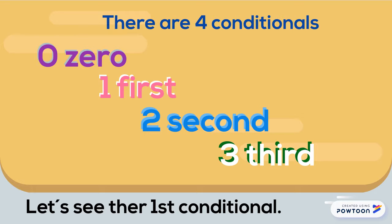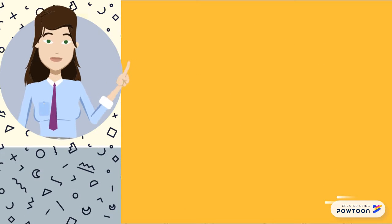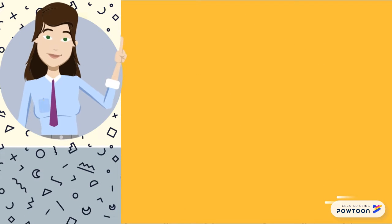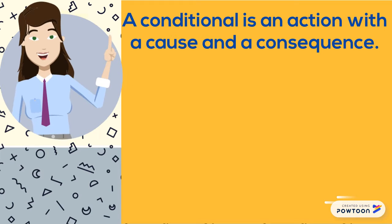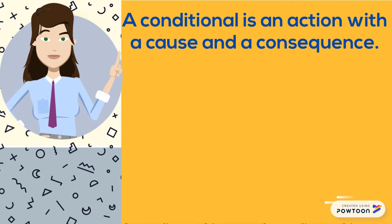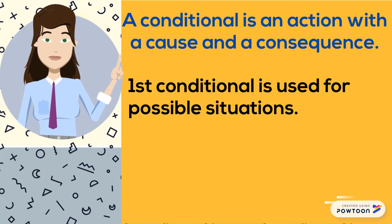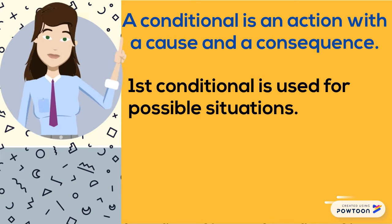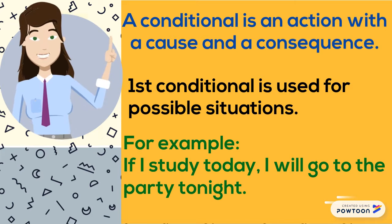Now, let's see first conditional. But what's a conditional? A conditional is an action with a cause and a consequence. First conditional is used for possible situations. For example,